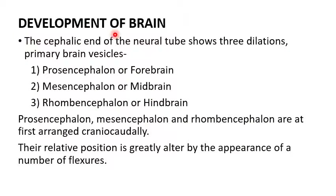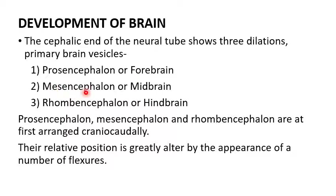Development of the brain in brief: the cephalic end of the neural tube shows three dilations known as primary brain vesicles — the prosencephalon (forebrain), mesencephalon (midbrain), and rhombencephalon (hindbrain).